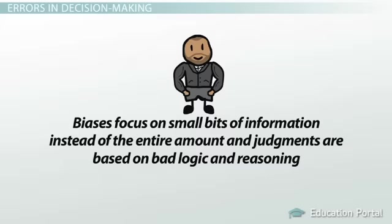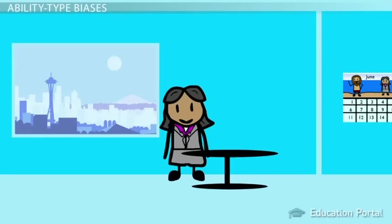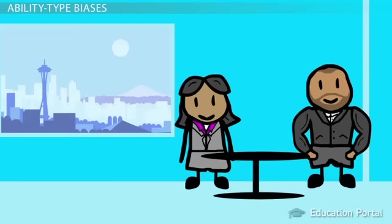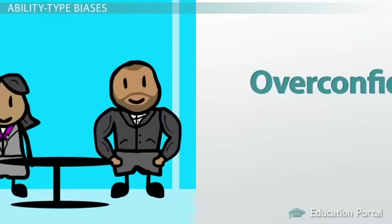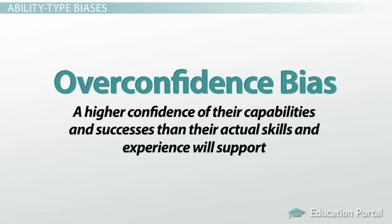The consultant was set on discovering why Pair Products was self-destructing and unsuccessful after so many profitable years. First, he found several biases relating to the company and its members' perceived ability. The very first reason for Pair's issue was because Upper Management was culpable of an overconfidence bias. This is when Upper Management has a higher confidence of their capabilities and successes than their actual skills and experience will support.